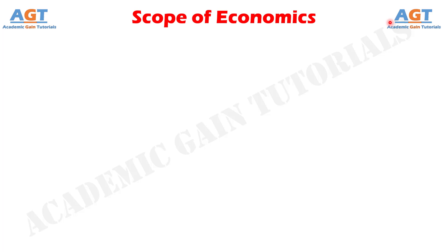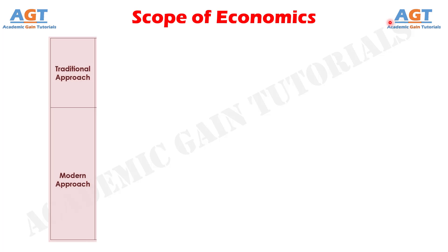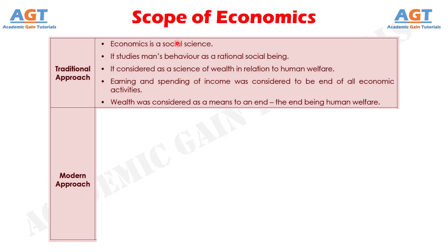The scope of economics can be viewed from two different approaches. According to the traditional approach, economics is a social science. It studies man's behavior as a rational social being. Economics is considered as a science of wealth in relation to human welfare. Earning and spending of income was considered to be the end of all economic activities.